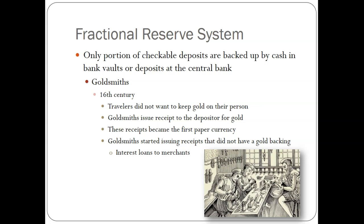Those receipts became the first version of what we think of as paper currency — backed by gold. Goldsmiths started issuing receipts even if they didn't exactly have the gold, because nobody came looking for it. They would charge interest — an early banking system. The hard lesson came when people did start asking for their gold and the goldsmiths found they didn't have all of it. People got upset, and now we have it as a rule and guideline.